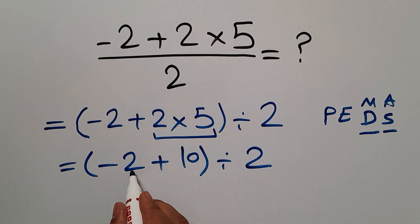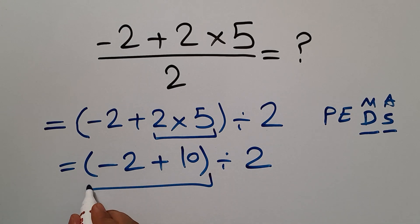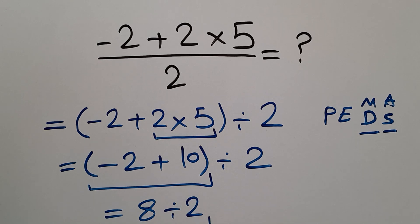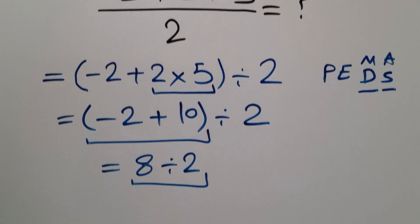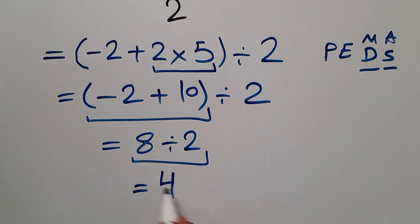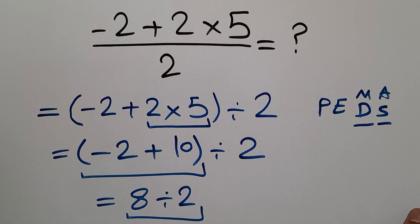Negative 2 plus 10 equals 8. So 8 divided by 2, which equals 4. Our final answer to this problem is 4.